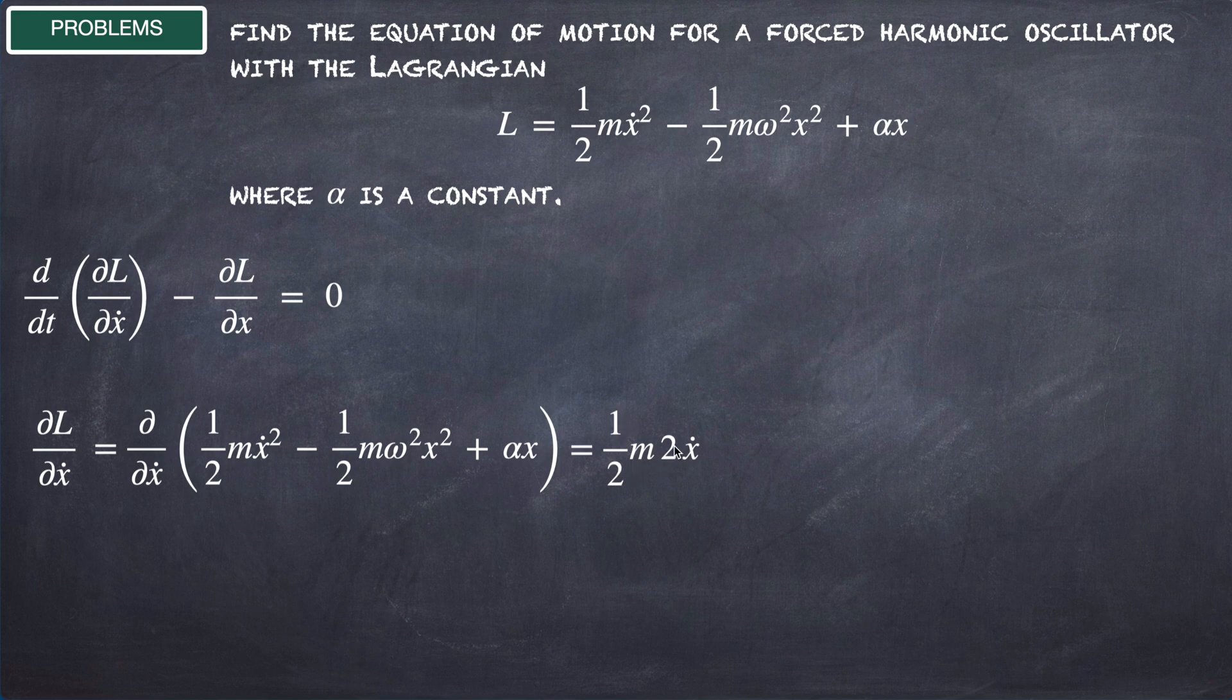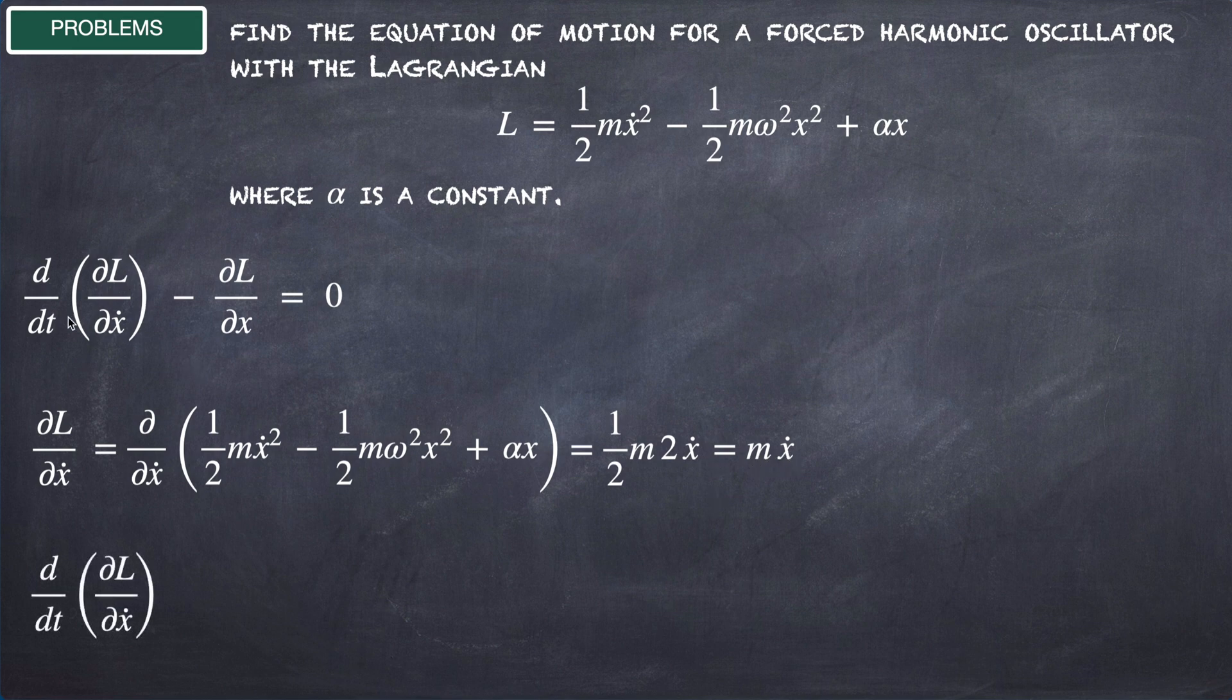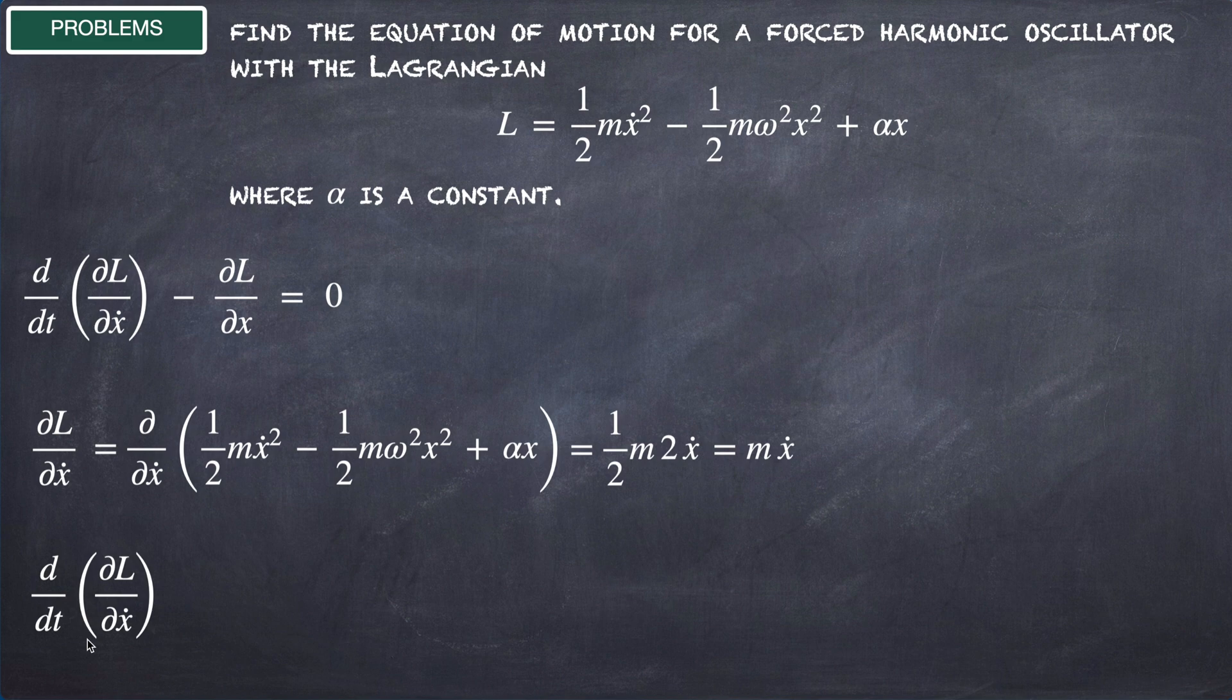(1/2)m × 2ẋ = mẋ. But we need the total time derivative of this result, which is equal to mẍ.